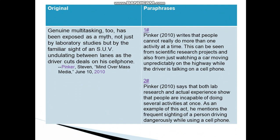Let's have a look at the first paraphrase. Pinker, 2010, writes that people cannot really do more than one activity at a time. This can be seen from scientific research projects, and also from just watching a car moving unpredictably on the highway while the driver is talking on a cell phone. The second paraphrase: Pinker, 2010, said that both lab research and actual experience show that people are incapable of doing several activities at once. As an example, he mentions the frequent sighting of a person driving dangerously while using a cell phone. So, as you can see, both ways give the meaning of the original text but without copying any of the actual words of the writer.